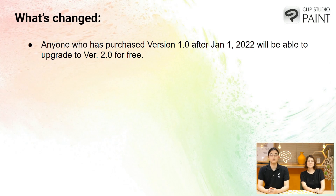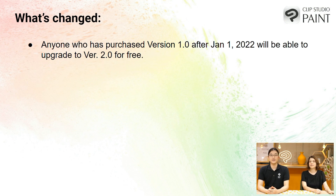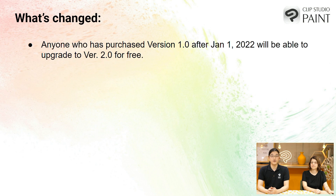The initial August announcement about version 2 was the first time it was announced and we got a lot of very passionate feedback on it. We have now changed some details to make version 2.0 more accessible. First off, if you have purchased version 1 anytime in 2022, you will get version 2.0 for free. This version 2.0 will be a perpetual license, meaning you can keep using it without any additional payments.